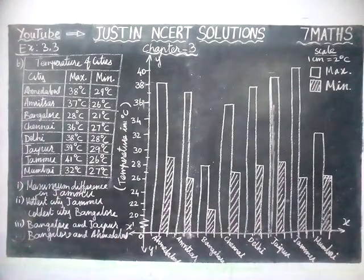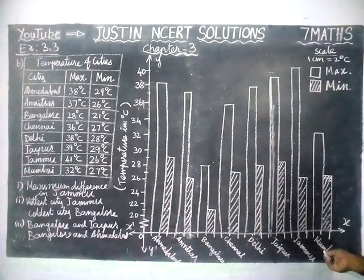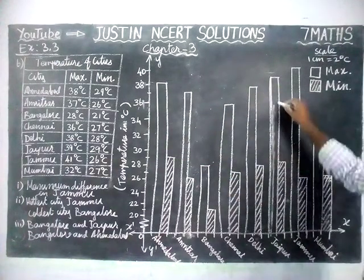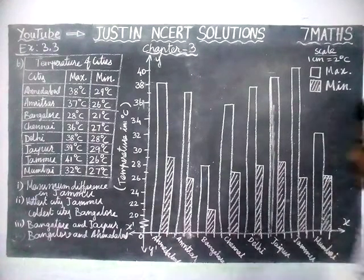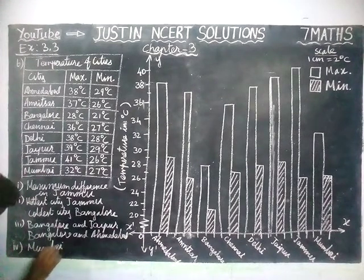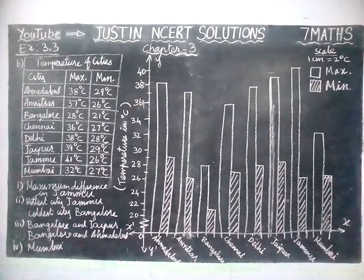Fourth question: name the city which has the least difference between its minimum and maximum temperature. From the graph, Mumbai has the very least difference. You can see the maximum difference bars elsewhere, but the minimum difference is in Mumbai only. That's all, students. Kindly give your suggestions in the comments box, share this video with your friends, and subscribe to our channel. Thank you.